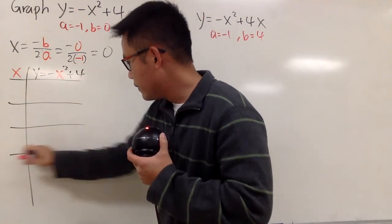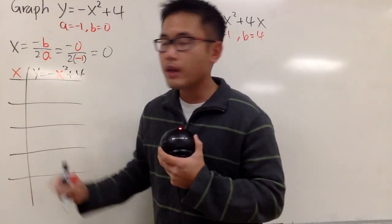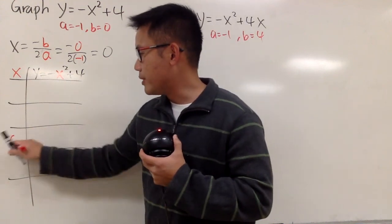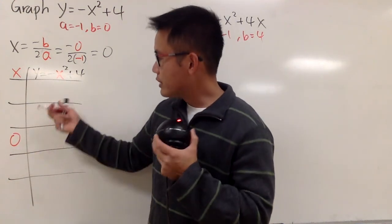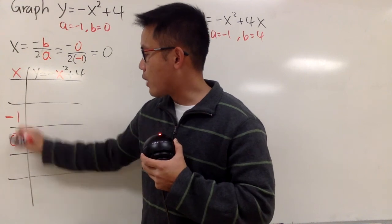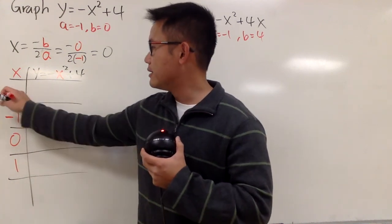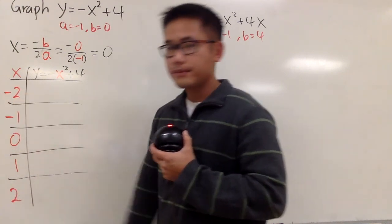And let's put down 5 points. Always put this number right in the middle, and then pick its neighbor numbers. So in this case, we will use negative 1 and 1, and then negative 2 and 2.